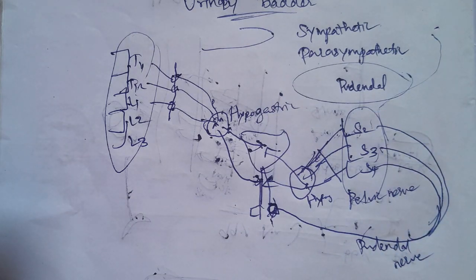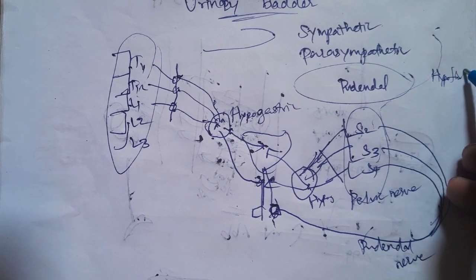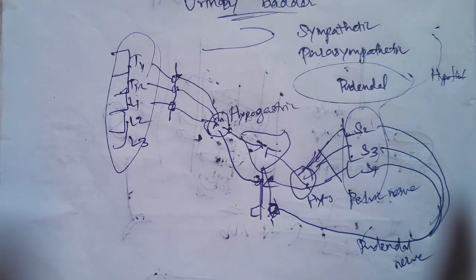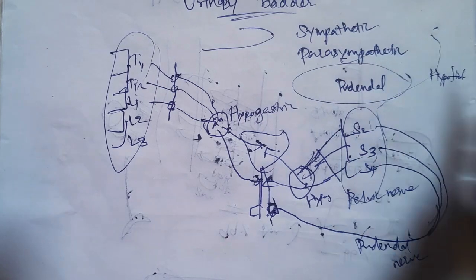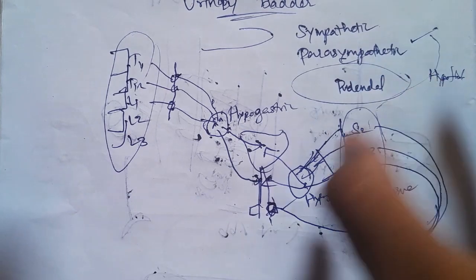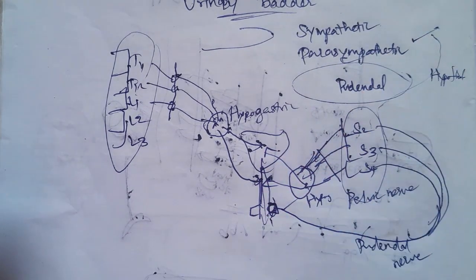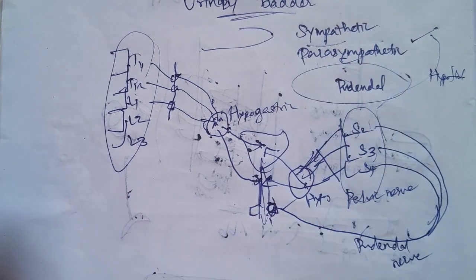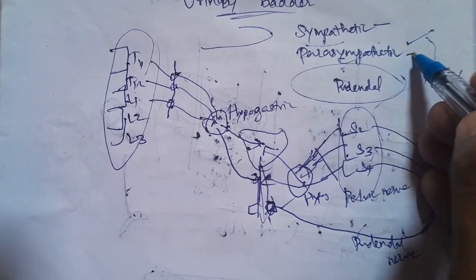Once the cerebral cortex situation is appropriate, a signal goes to the hypothalamus. Parasympathetic is then activated, and we relax the sphincters. If the situation is blocked, sympathetic is activated. Sympathetic is responsible for filling; parasympathetic is responsible for emptying.